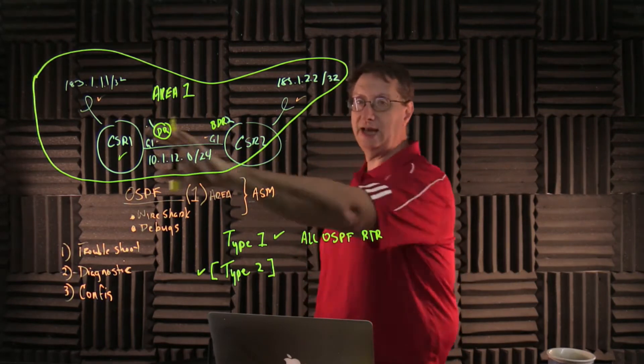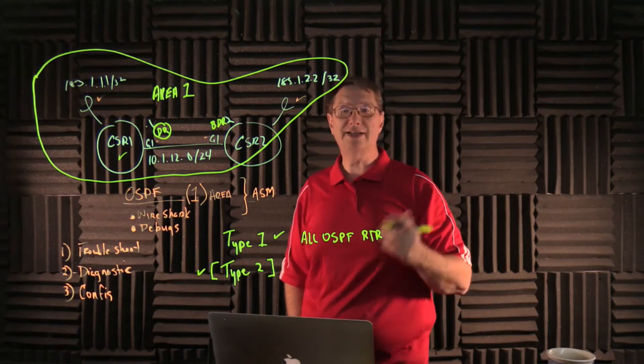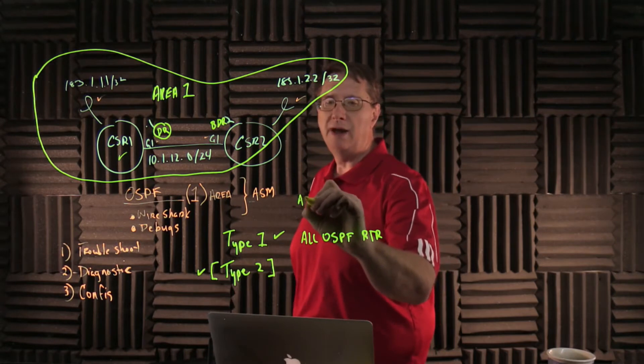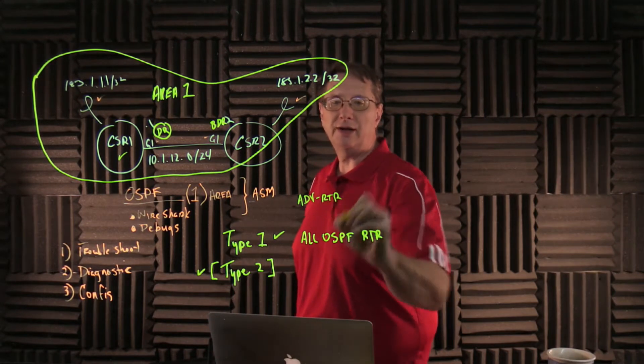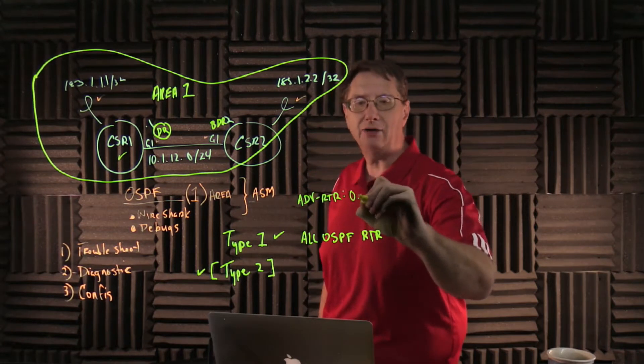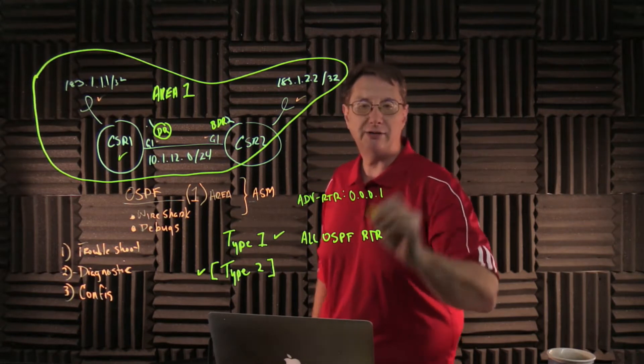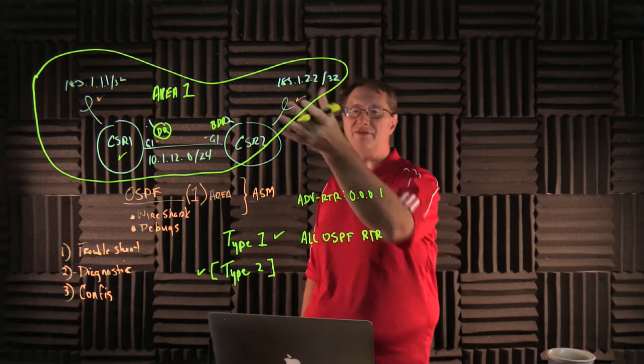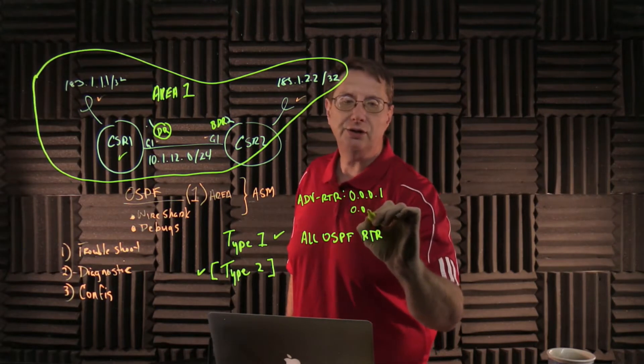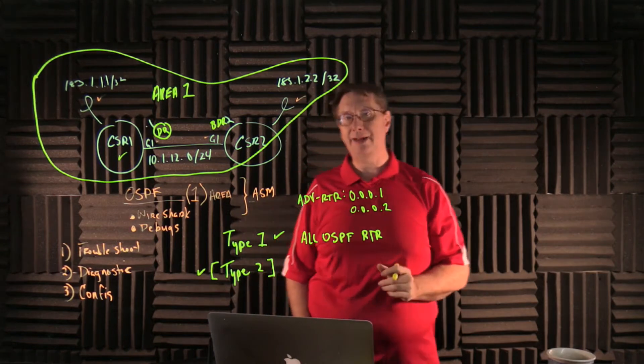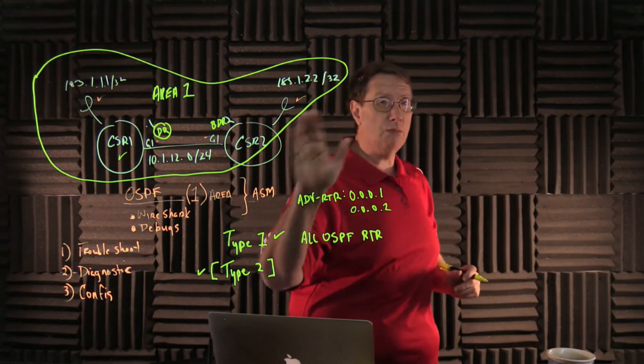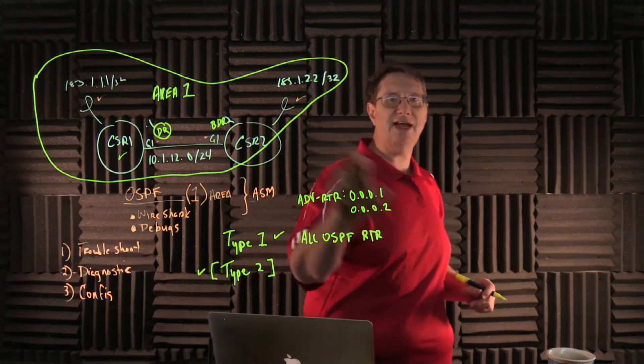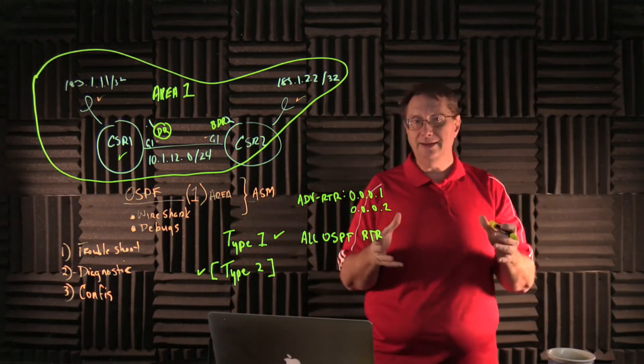So in this instance, this Type 1 LSA coming from CSR1 is actually going to be advertised using its router ID. So what we'll see is we'll see something called the advertising router configuration, and that is actually going to translate to the router ID of the device that actually generates it. And since CSR2 and CSR1 are both inside of Area 1, it should be understood that each one of them is going to generate a Type 1 LSA. Okay, if CSR2 was in more than one area, which it can be, and it will be later on in our conversation, it will actually generate a Type 1 LSA for every area that it's going to be in.